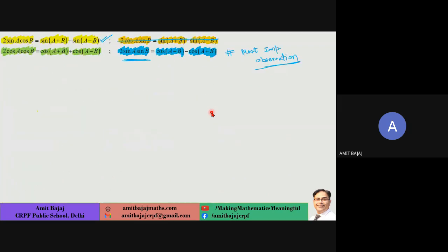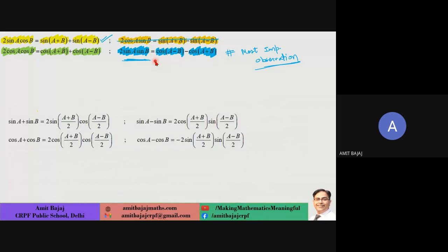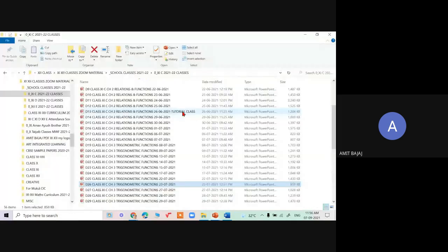Then these important product-to-sum formulas: 2 sin A cos B, 2 cos A cos B, 2 sin A sin B — the most confusion occurs with these formulas. Note the differences carefully. Then very important formulas: sin A + sin B, sin A − sin B, cos A + cos B, cos A − cos B. Revise this topic.